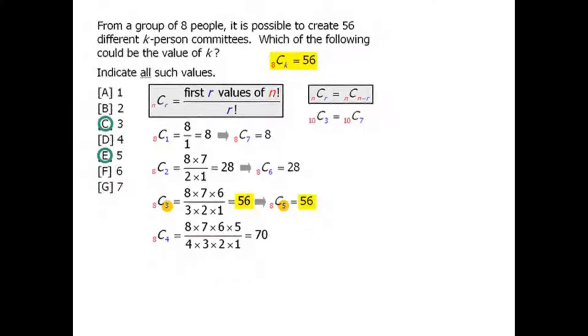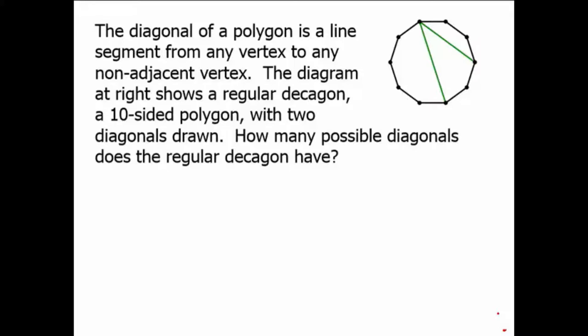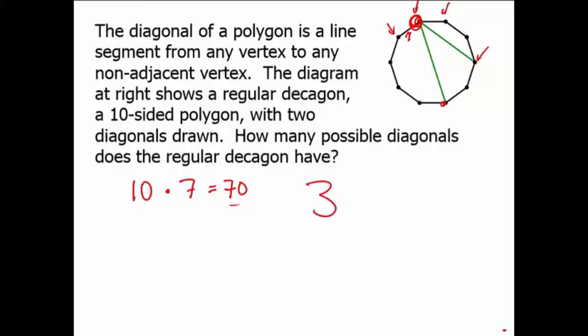For any diagonal in a decagon, we have a starting vertex and an ending vertex. We have 10 choices for the starting vertex. For any given starting vertex, it cannot connect to itself or to either adjacent vertex, so there are 7 possible destinations. That gives 10 times 7 equals 70. However, each diagonal gets counted twice — once for each endpoint as the start — so we divide by 2, giving 35. That is the number of possible diagonals in a regular decagon.